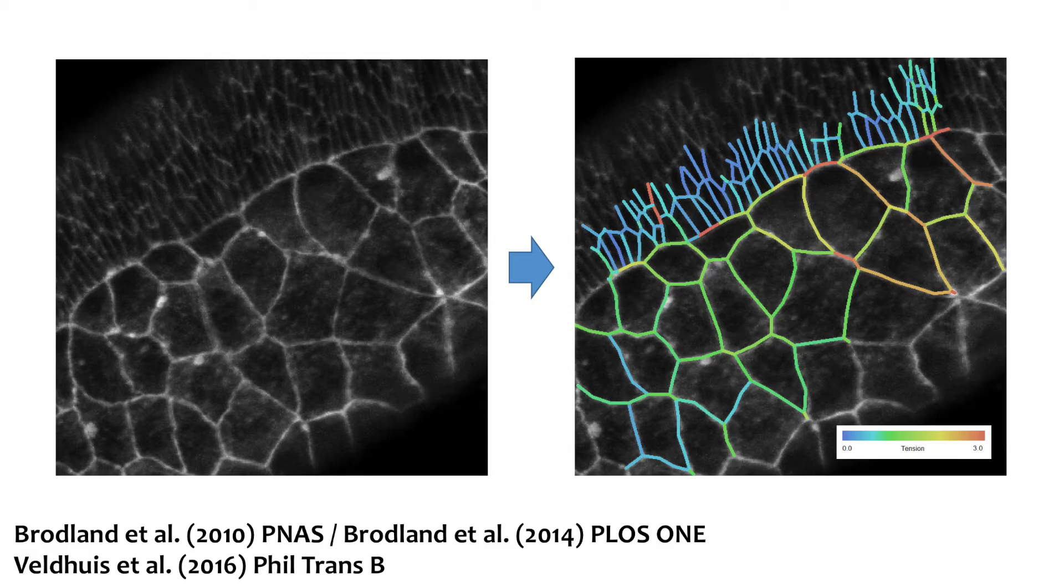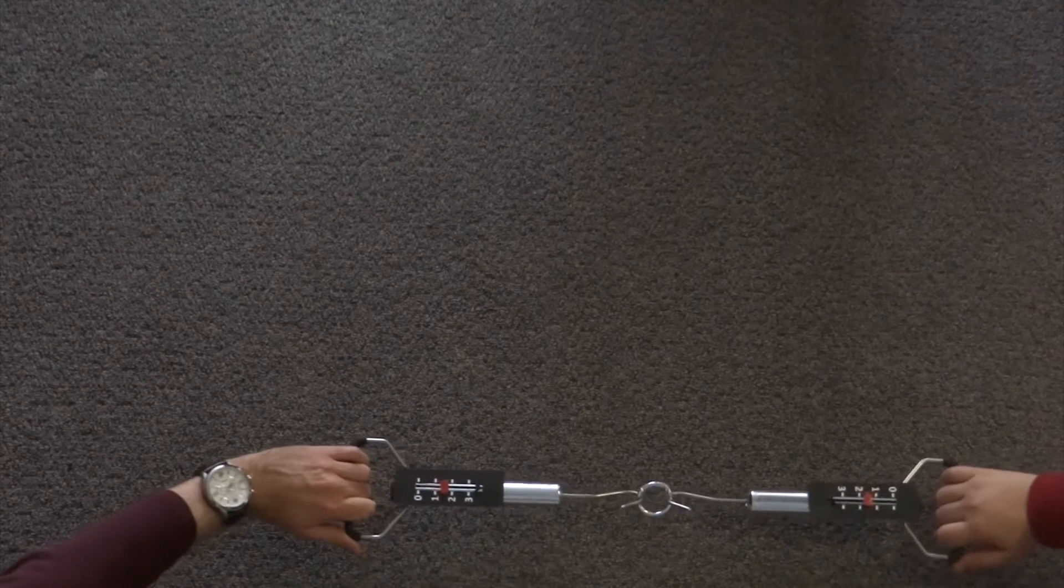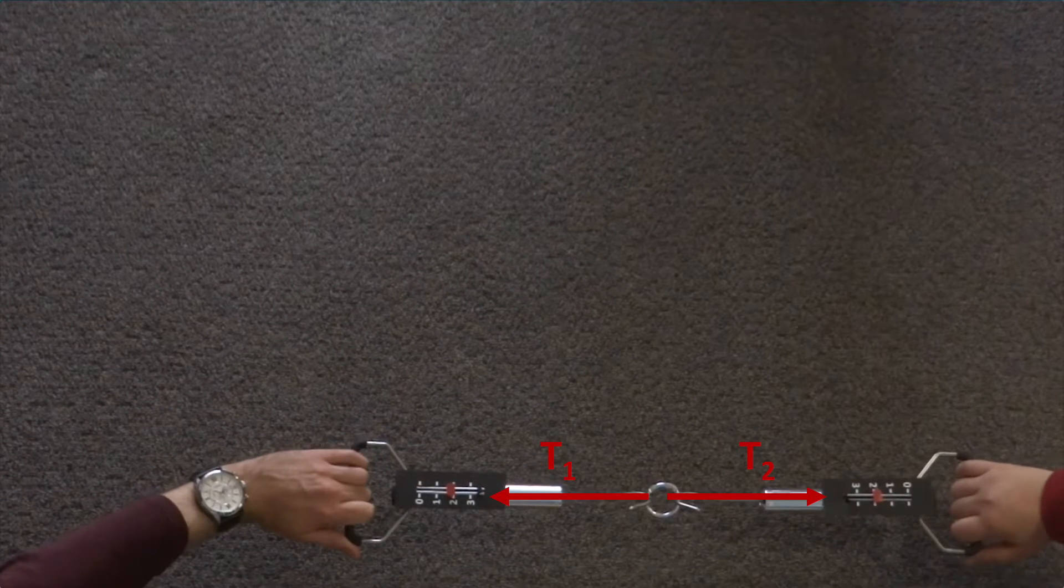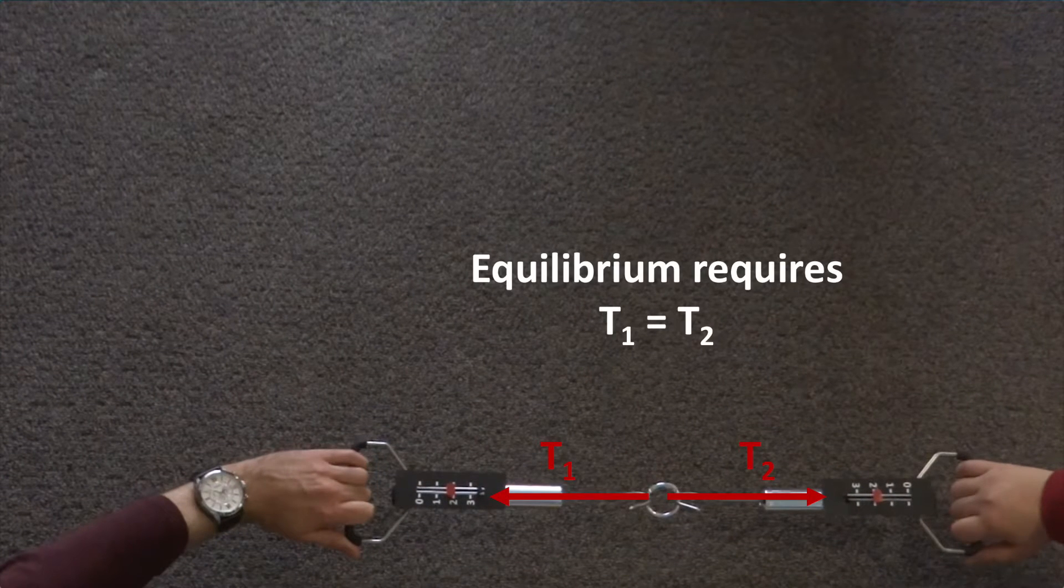To understand how the technique works, consider a tug of war. The forces exerted by two spring scales must be equal for the point between them to remain in equilibrium.